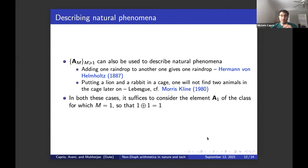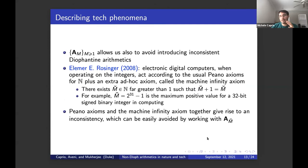This class can also be used to describe natural phenomena, for example, the raindrop example I was talking about before. And also a humoristic one given by Lebesgue and reported by Maurice Klein in his paper that says putting a lion and a rabbit in a cage, we will not find two animals in the cage later on. In both of these cases, it's enough to consider element A_1 of the class. So for which M is equal to one and we will have one O plus one is equal to one. And so we don't need to introduce inconsistency.